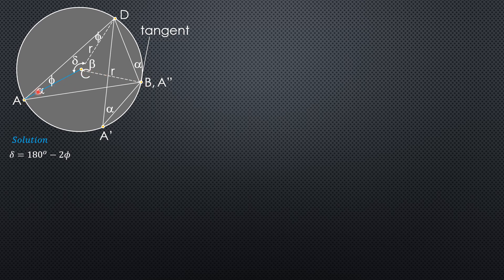Because AC is the radius and BC is also a radius, triangle ACB is also an isosceles triangle. Therefore, if the peripheral angle at A is alpha, then angle CAB equals alpha minus p. This is also alpha minus p because triangle ACB is isosceles.